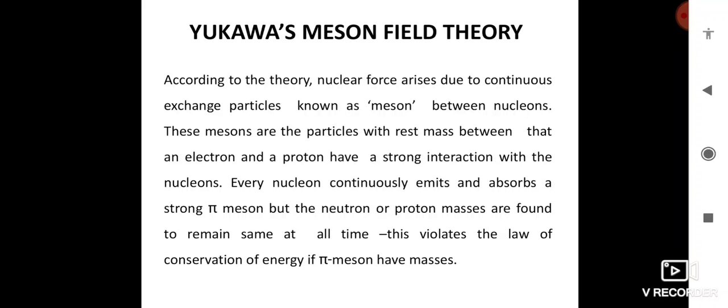Let us assume that pions travel between nucleons at a speed equal to the speed of light C. The uncertainty in measurement of energy of phi-meson corresponds to rest mass energy. That is, delta E equals m_pi times C squared.